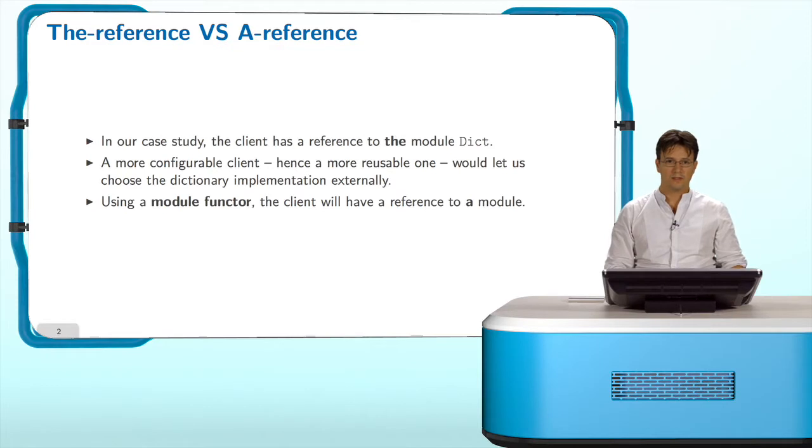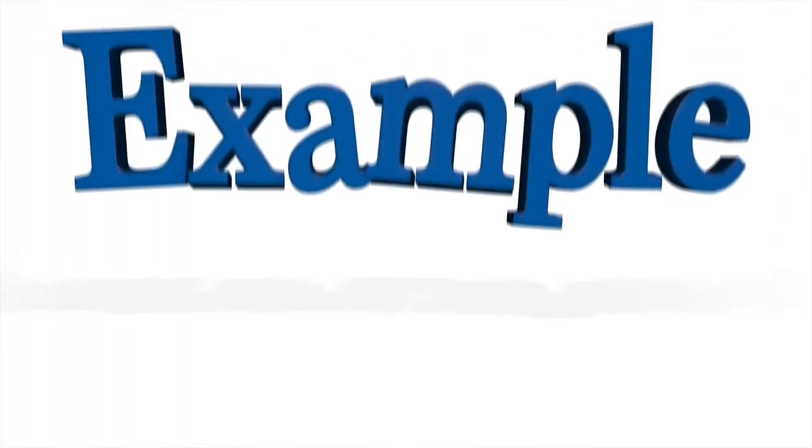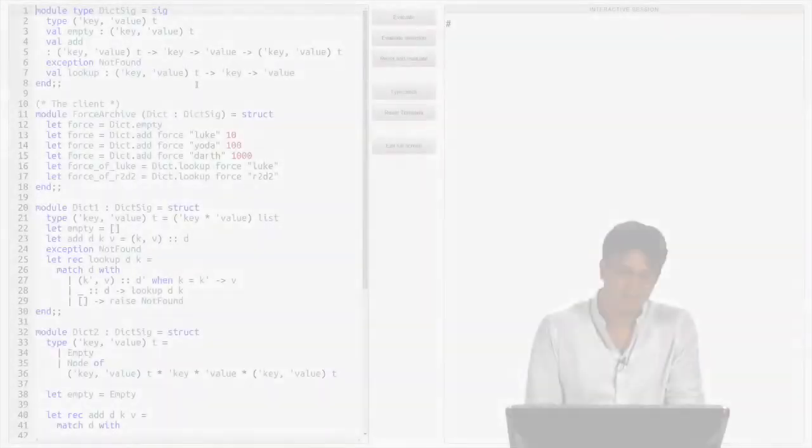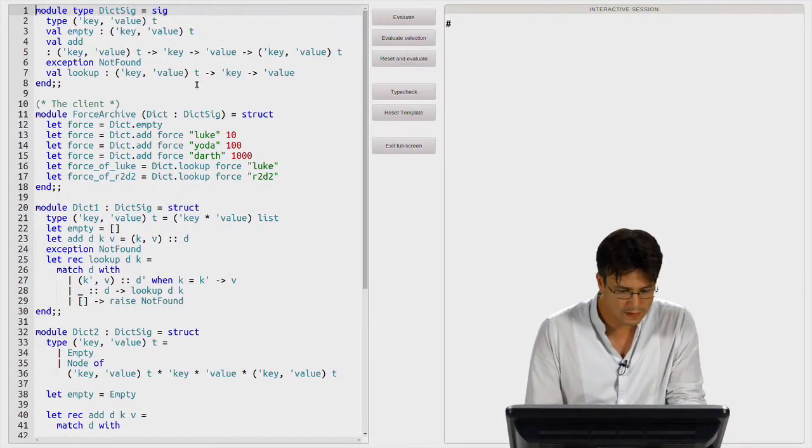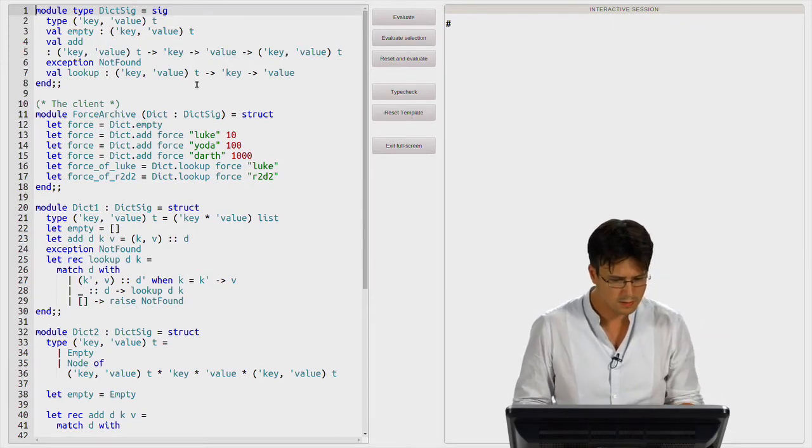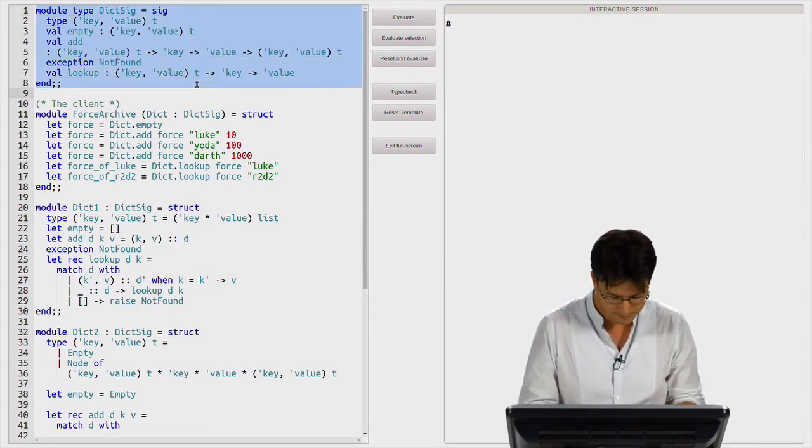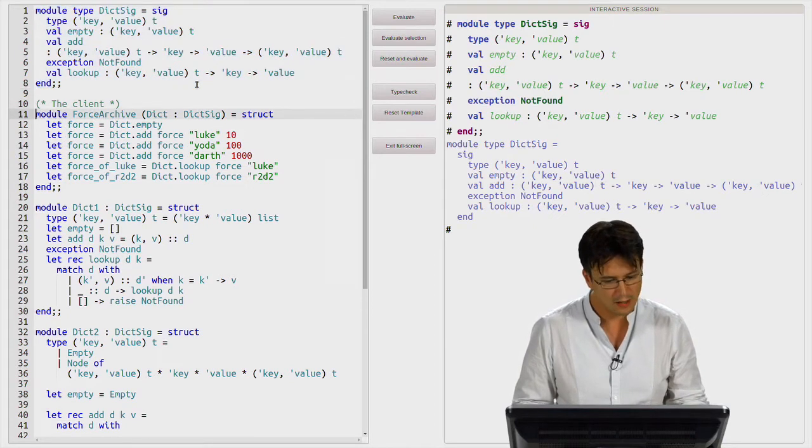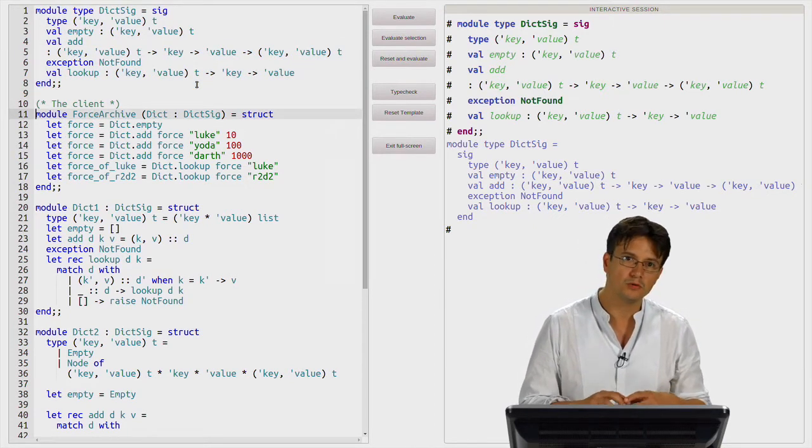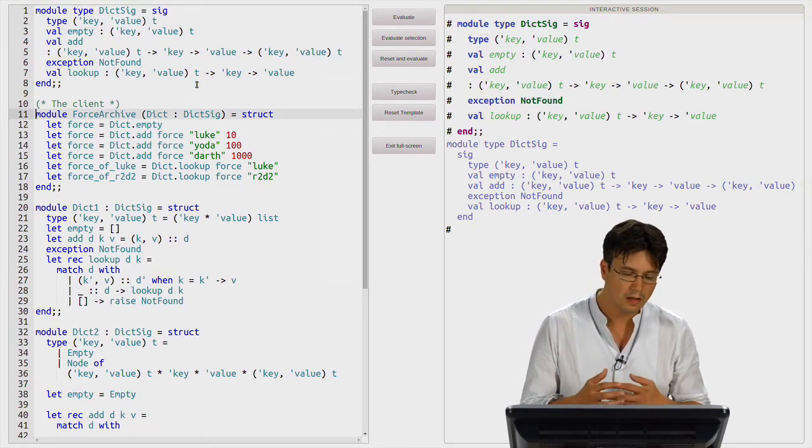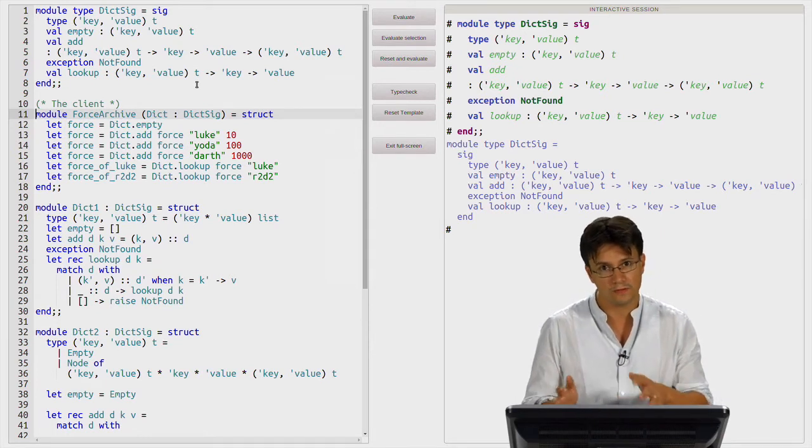That will be exactly the purpose of the module functor. Our functorized client will have a reference to a module which implements the dictionary interface. Let us come back to the example of the case study. We have this module type for dictionary that doesn't change. Now, we want to be able to reuse the client afterwards on different implementations of this dictionary.